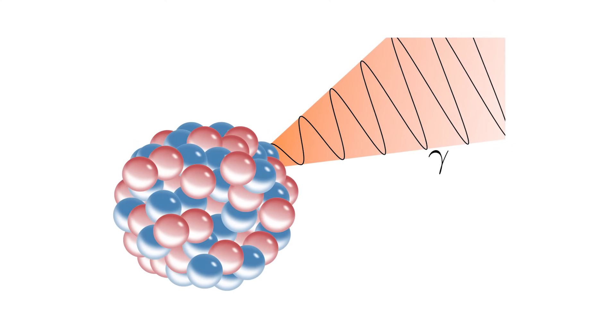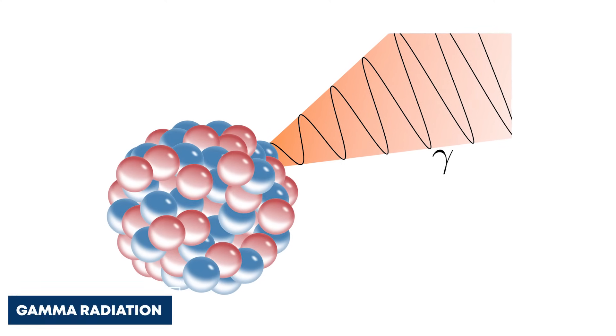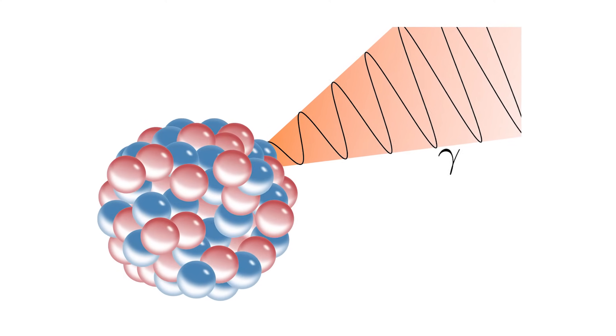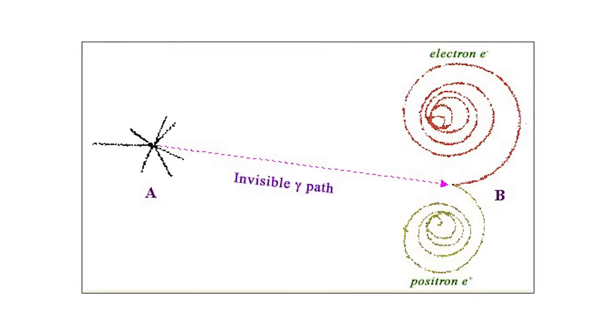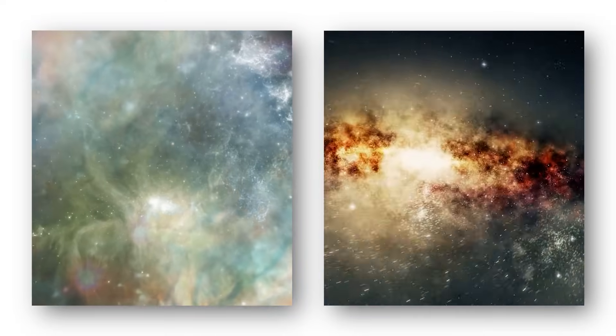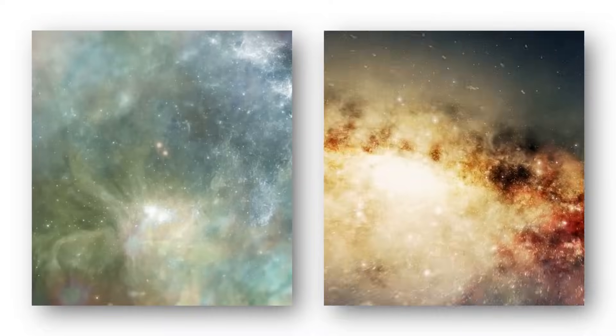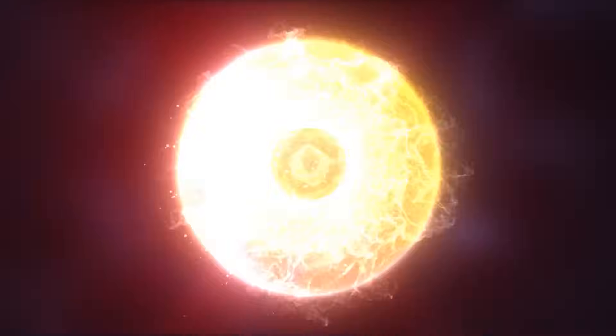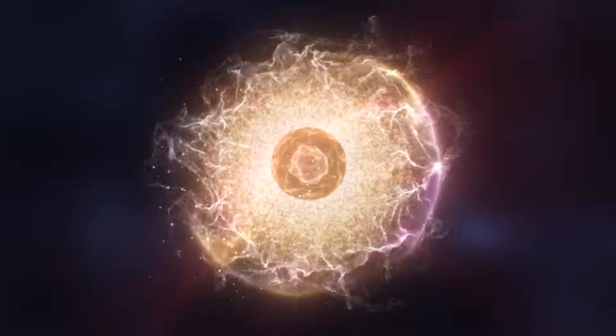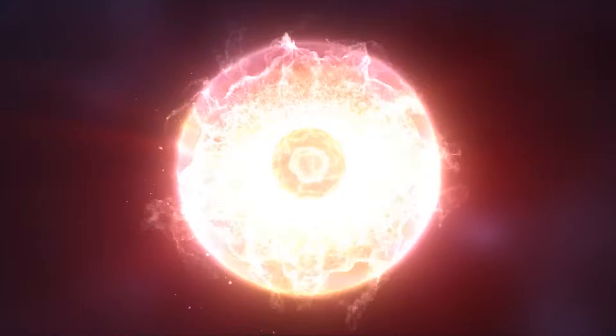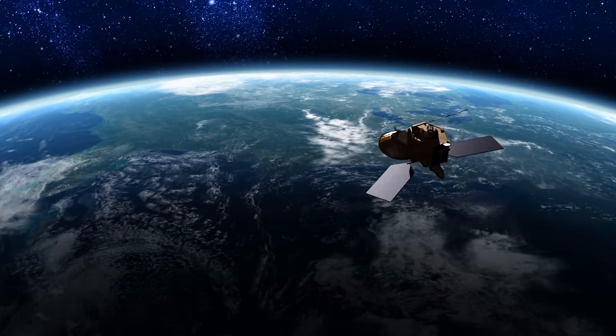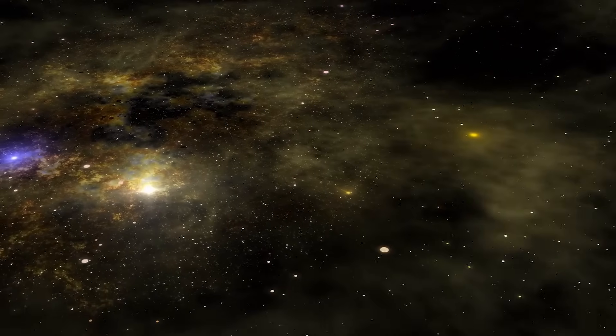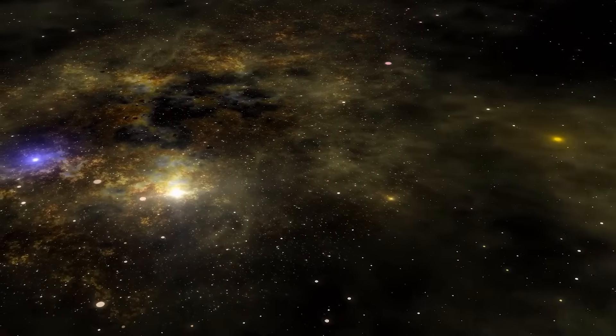The explosion also unleashes a tremendous amount of gamma radiation, the most powerful form of electromagnetic radiation. Gamma rays can create pairs of electrons and positrons when they interact with other particles. While most of this radiation gets absorbed by the surrounding gas and dust, some of it may reach our solar system. However, there's no need to worry as Betelgeuse is far away, and the radiation poses no direct threat to our planet. Instead, it adds to the background radiation that our satellites and space telescopes detect, giving scientists valuable information about high energy processes in the universe.